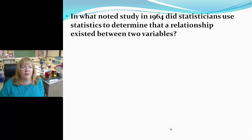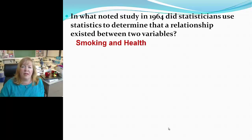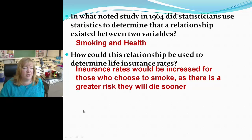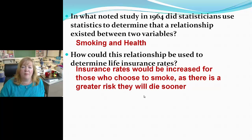In what noted study in 1964 did statisticians determine that a relationship existed between two variables? In 1964 they did a huge study on smoking and health. They determined that smoking was bad for you. Insurance rates would be increased for those who choose to smoke, as there is a greater risk they will die sooner. The insurance companies don't want to be paying out more than they're taking in, so if smoking causes people to die quicker, they'll raise your insurance if you're a smoker.